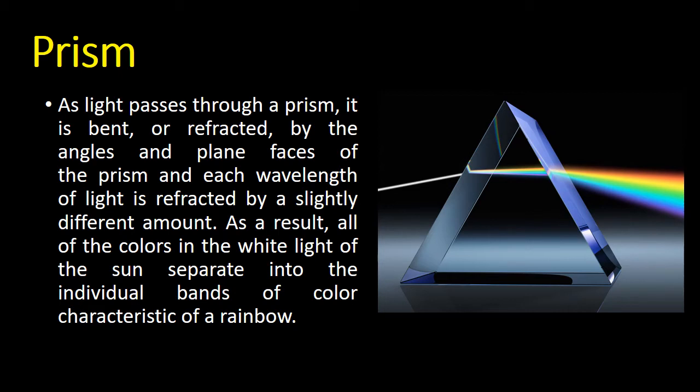As a result, all of the colors in the white light of the sun separate into the individual bands of color characteristic of a rainbow, as you can see on the right side of your screen.